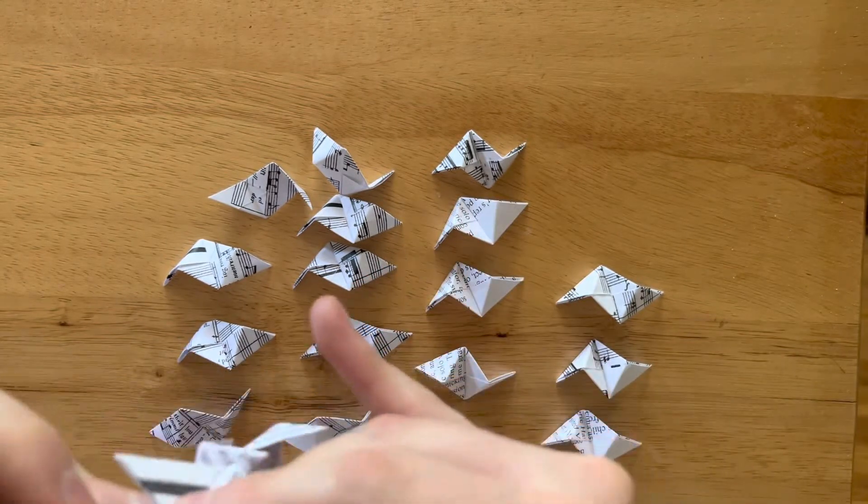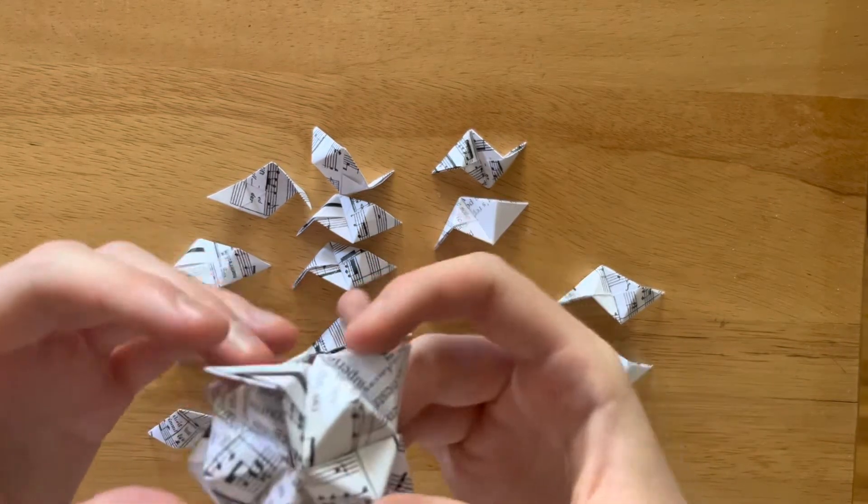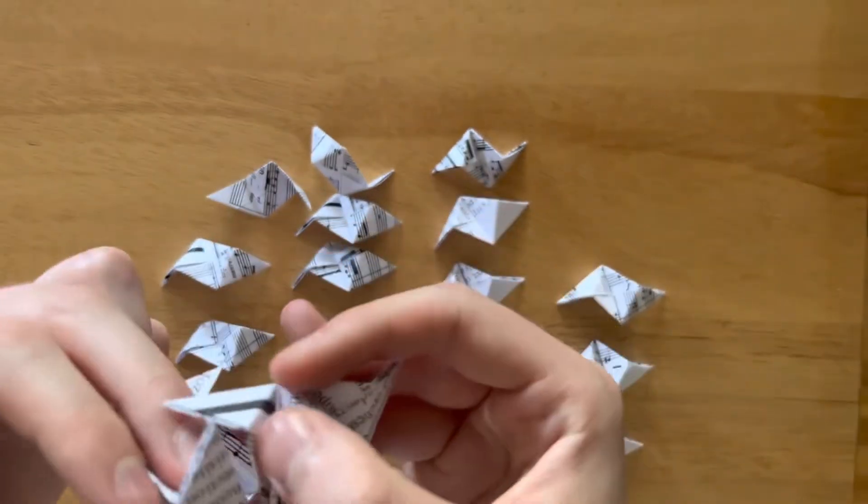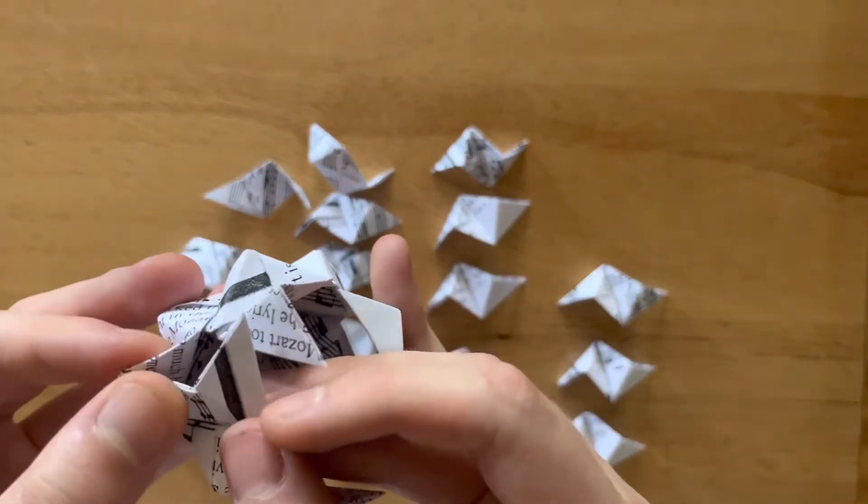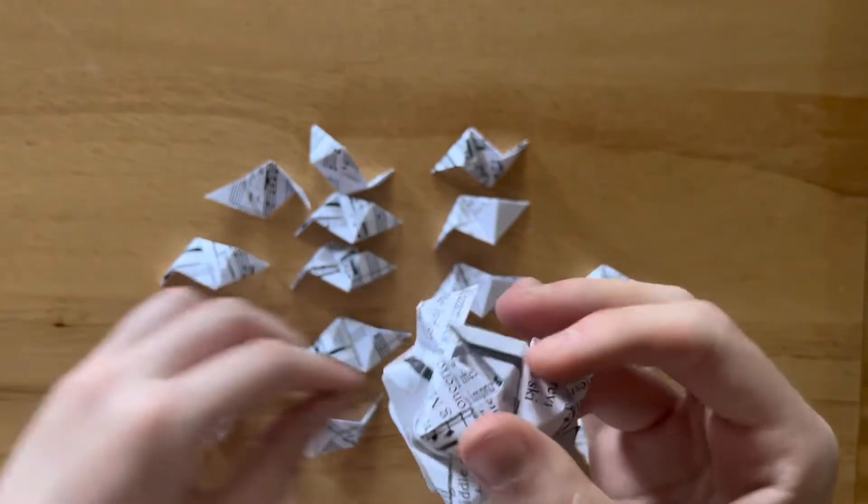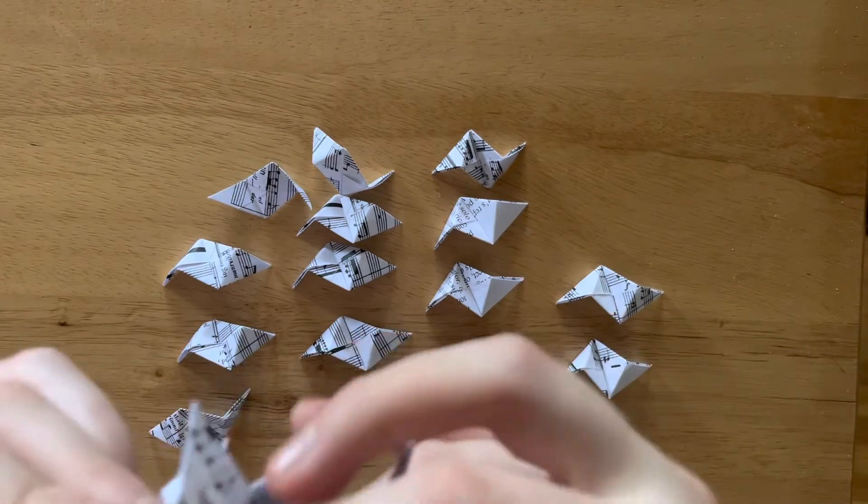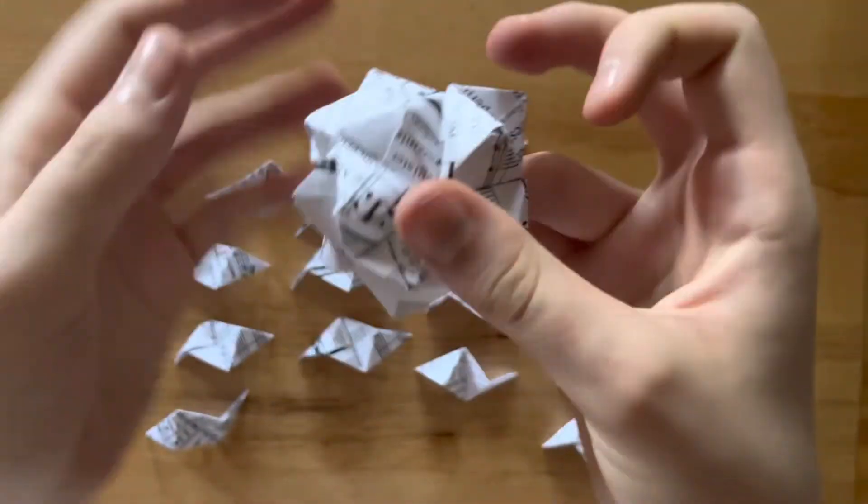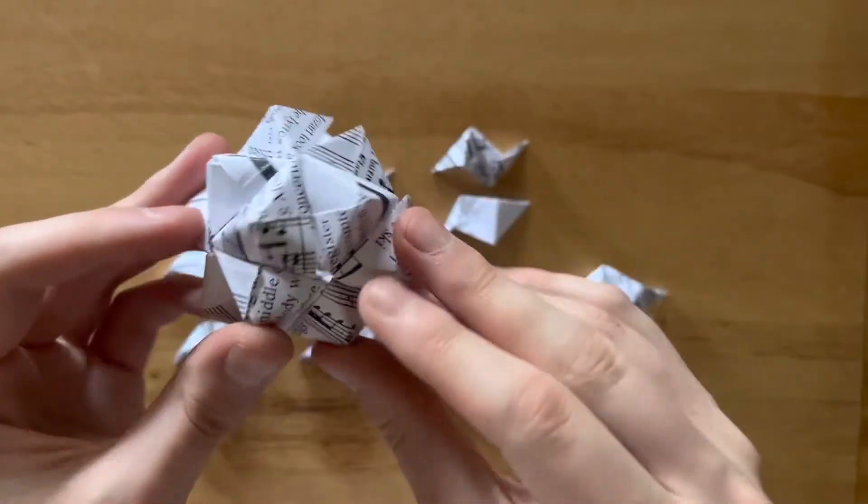And now would be a good time, like I say, to shut off the TV or the movie and just put music on. So now we have our four points. So we'll put this flap in this pocket. And then we need one more piece to complete this next group of five. There we go.